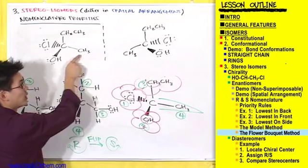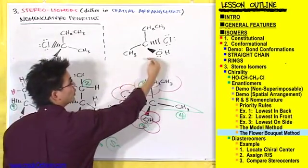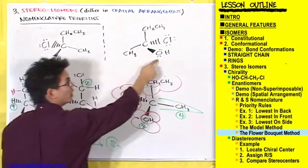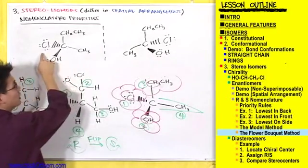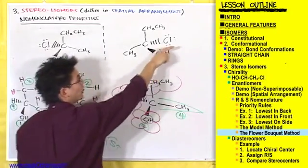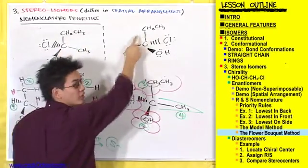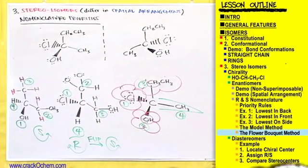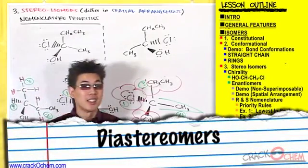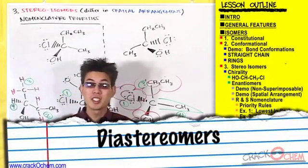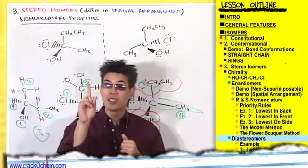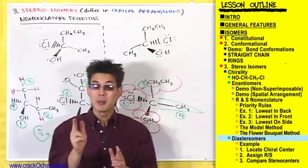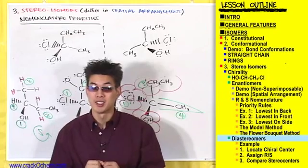Here CH3 is going to the right; here CH3 is going to the left. Here an OH is going to the left; here an OH is going to the right. Cl is going to the left; Cl is going to the right. And these both point straight up. So far, we've been looking at compounds that only have one chiral center, but you can have compounds with multiple chiral centers.